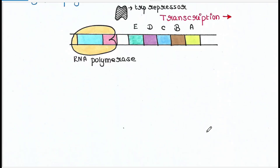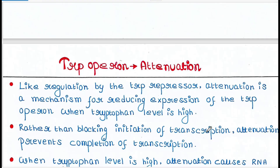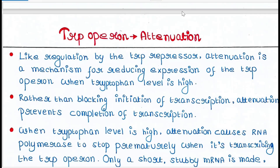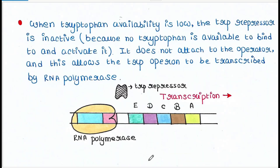Apart from this system, bacteria have one more mechanism to switch on tryptophan synthesis — that is the attenuation system. We will talk about it in the next lecture. I hope you liked the lecture. Thank you for watching.